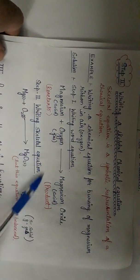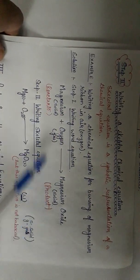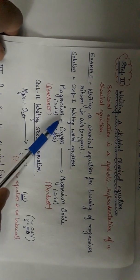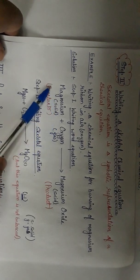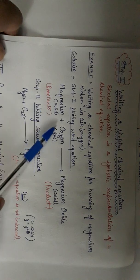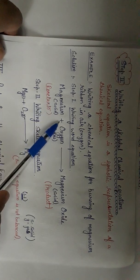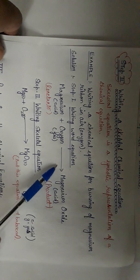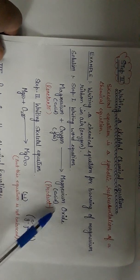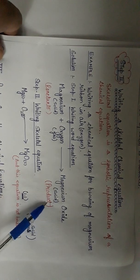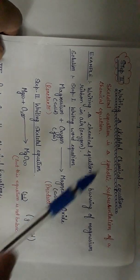This is a chemical reaction. Reactants are written on the LHS — left-hand side — with a plus sign in between them. There is an arrow which is pointing towards the direction of the reaction, and this is the product.